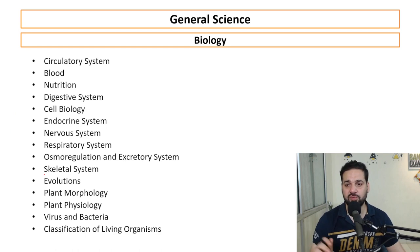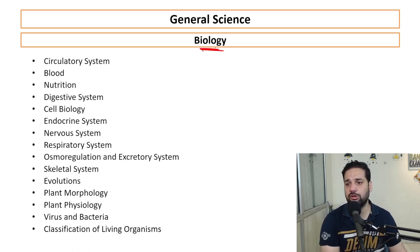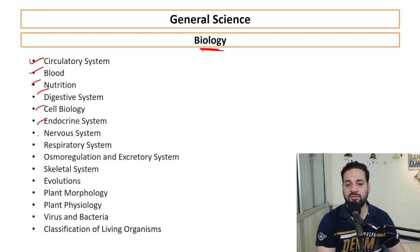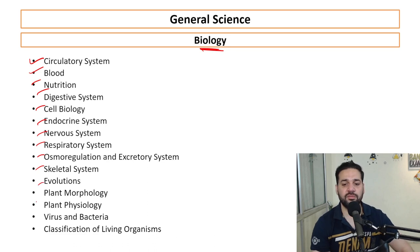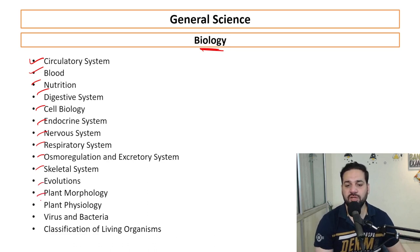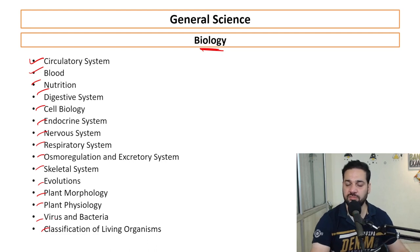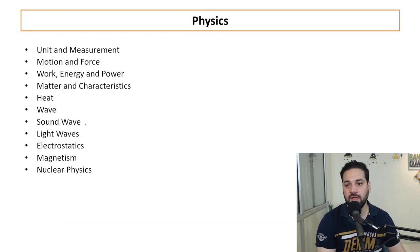For Biology, topics include: circulatory system, blood, nutrition, digestive system, cell biology, endocrine system, nervous system, respiratory system, osmoregulation and excretory system, skeletal system, evolution, plant morphology, plant physiology, virus, bacteria, and classification of living organisms. The biology teacher will cover this section.